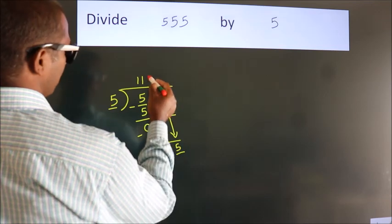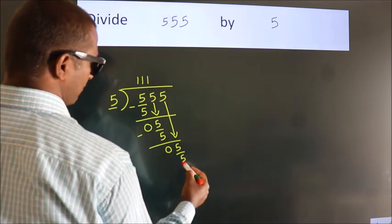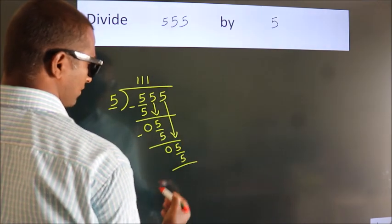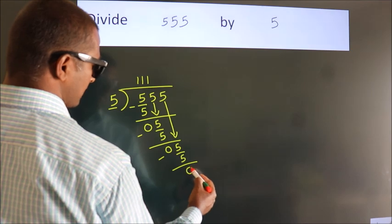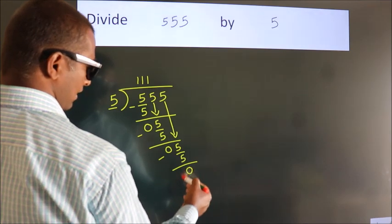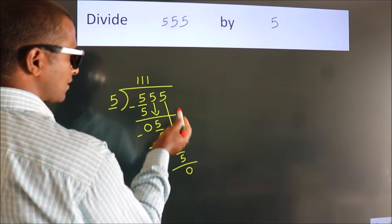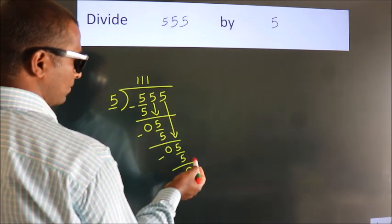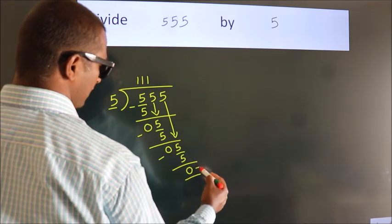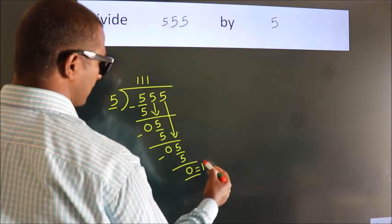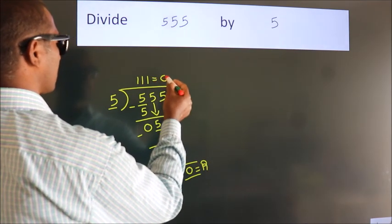Five once is five. We subtract and get zero. There are no more numbers to bring down, so we stop here. This is our remainder, and this is our quotient.